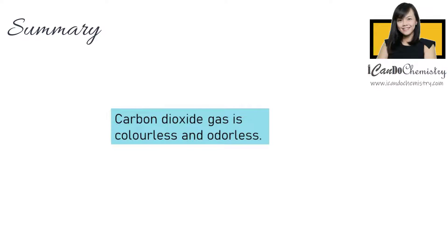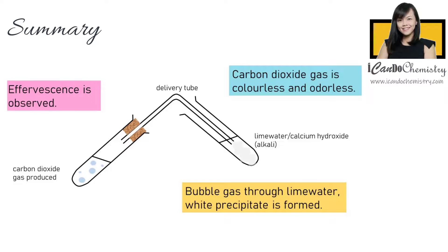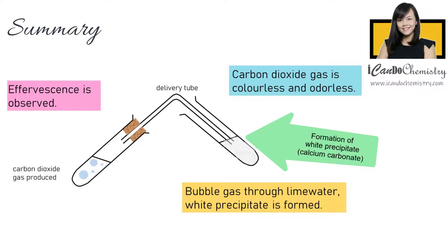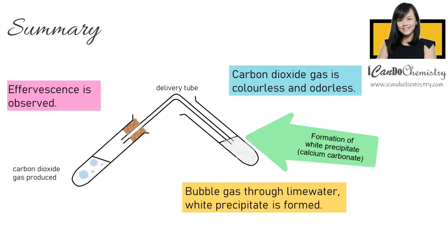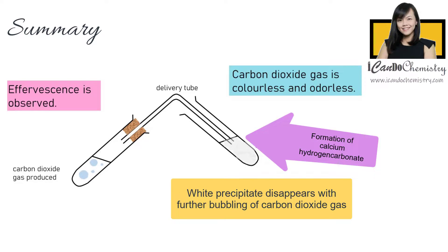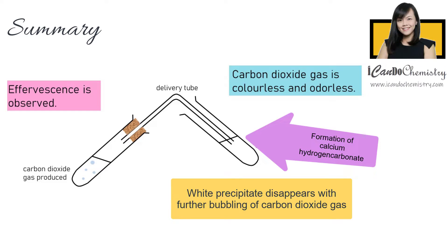In summary, like many other gases, carbon dioxide gas is colorless and odorless. So how do we identify it? When it is formed, we should observe effervescence. We bubble the gas through limewater, which is an alkali. If white precipitate is formed, we confirm the gas is carbon dioxide, which is an acidic gas. The white precipitate is insoluble calcium carbonate, the product formed from an acid and alkali reaction. If you further bubble through more carbon dioxide gas, you observe this white precipitate disappearing, because further bubbling forms a soluble product, which is calcium bicarbonate.